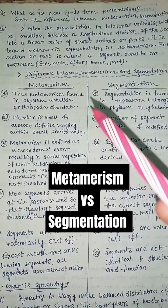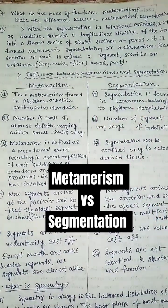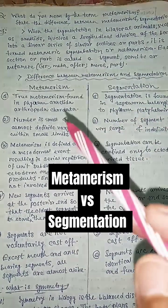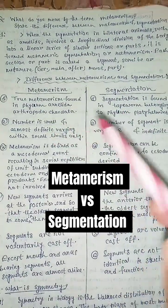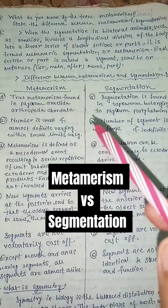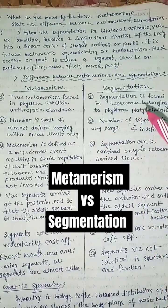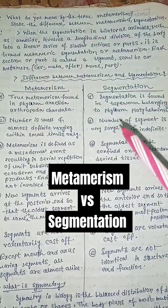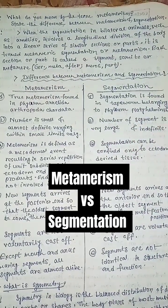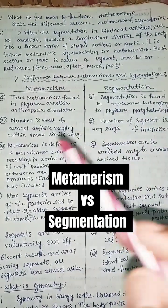Differences between metamerism and segmentation. True metamerism is found in Phylum Annelida, Arthropoda, and Chordata. Segmentation is found in tapeworms belonging to Phylum Platyhelminthes.